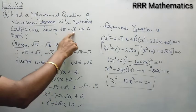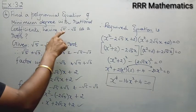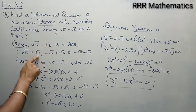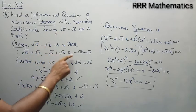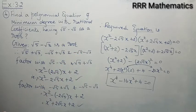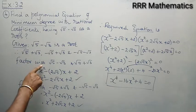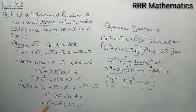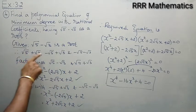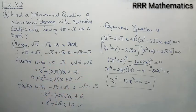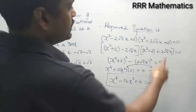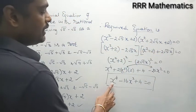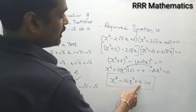I will repeat: √5 minus √3 is the given root. Therefore √5 plus √3, minus √5 plus √3, and minus √5 minus √3 are the other roots. Factor with √5 minus √3 and √5 plus √3 gives x² - 2√5·x + 2. With minus √5 plus √3 and minus √5 minus √3 we get x² + 2√5·x + 2. Multiplying these two and setting equal to 0 gives the required equation: x⁴ - 16x² + 4 = 0.